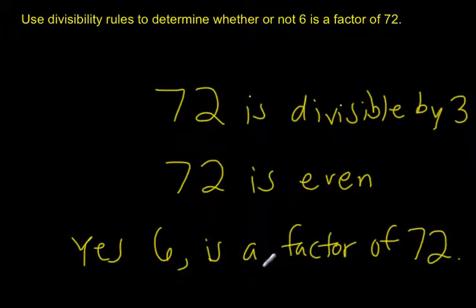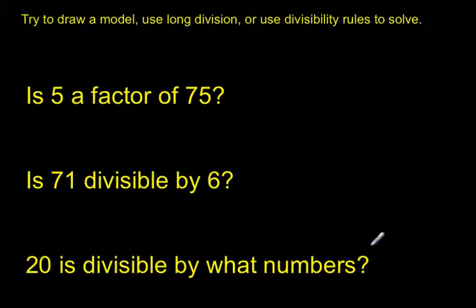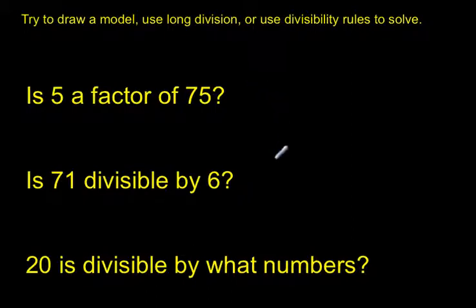If you need to, go back in the video and review those rules — you might write them down in your notes. Try using the different methods: try drawing a model, try using long division, try using divisibility rules. Some problems are easier to solve with one method over another, so look at the number and see whether you can use a quick divisibility rule. If not, use one of the other methods. Practice on these: Is 5 a factor of 75? Is 71 divisible by 6? What numbers is 20 divisible by? There's more than one answer for that last question.